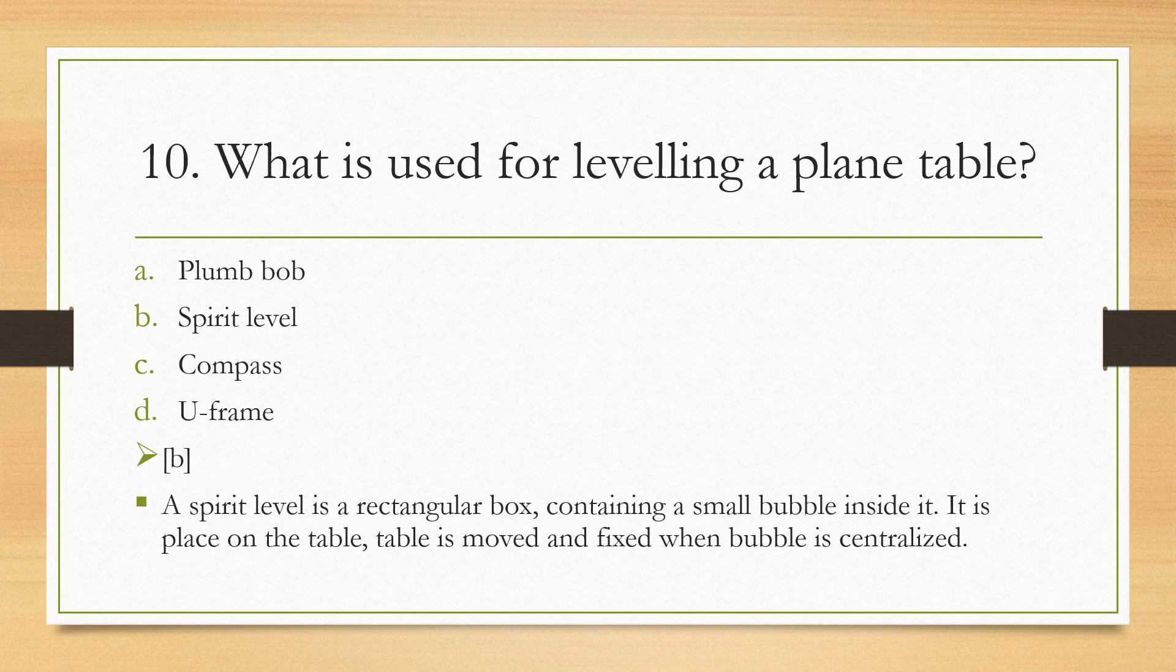Next question: What is used for leveling of plane table? Plumb bob, spirit level, compass, or U-frame? The right answer is spirit level. A spirit level is a rectangular box containing a small bubble inside it. It is placed over the table and then the table is moved and fixed when the bubble is centralized. When the bubble comes in the center, the table is fixed.